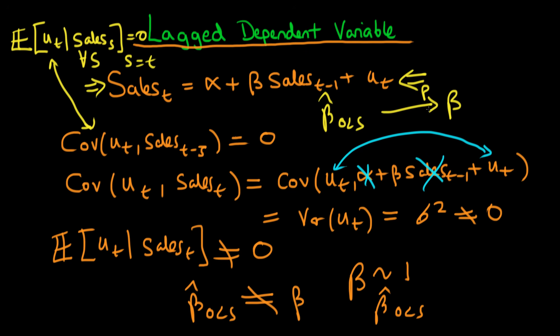So under some other assumptions, which I'm not going to talk about too much here, just to say that we call them weak dependency, it turns out that ordinary least squares is actually still a consistent estimator. So in large samples, all is not lost when we're estimating a lagged dependent variable model.